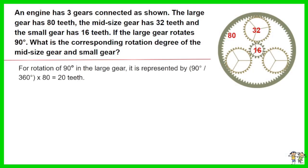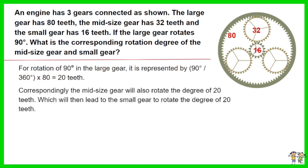For rotation of 90 degrees in the large gear, it is represented by 90 degrees divided by 360 degrees, then times 80 equals 20 teeth. Correspondingly the midsize gear will also rotate the degree of 20 teeth, which will then lead to the small gear to rotate the degree of 20 teeth.